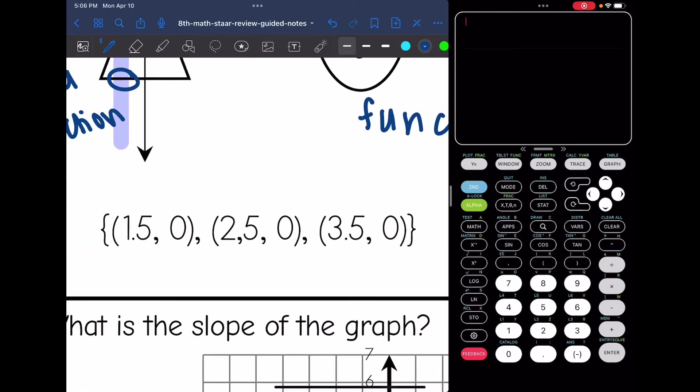Then I have ordered pairs. I'm just going to look at the x values. My x values are 1.5, 2.5, and 3.5. Those are all different. So this set of ordered pairs, it would be a function.